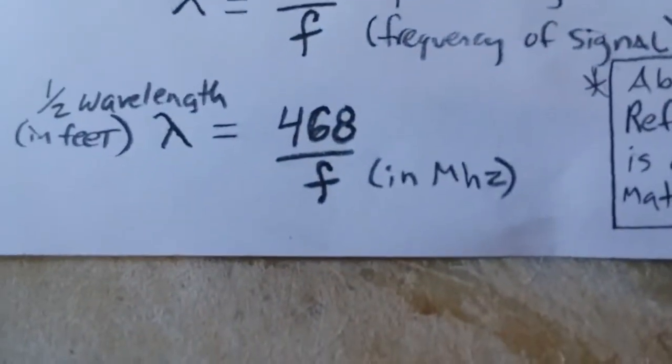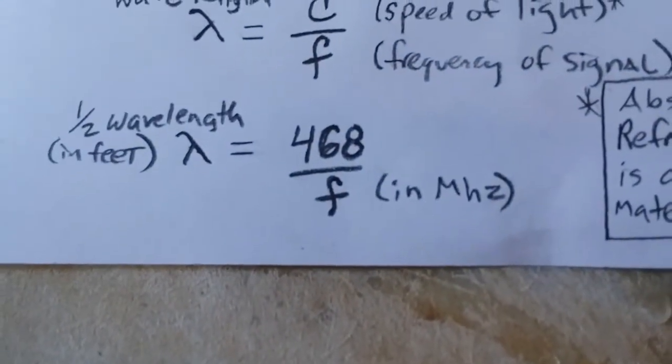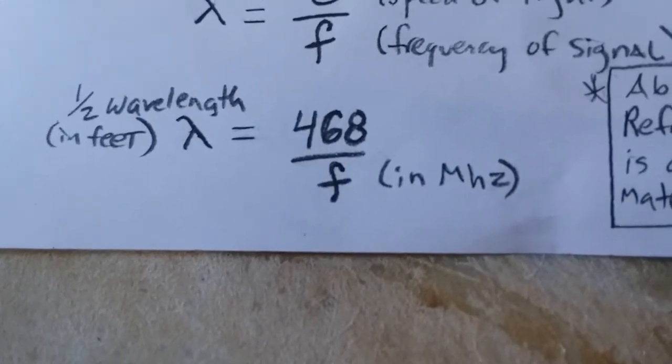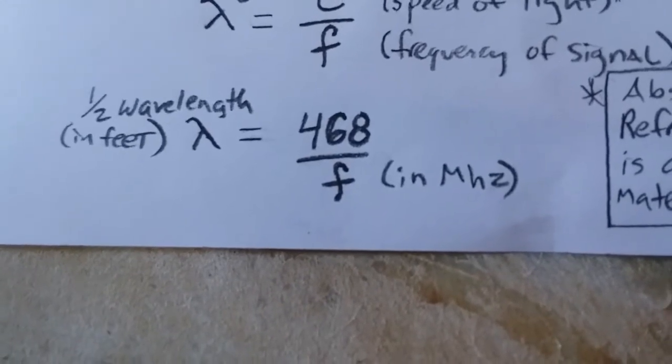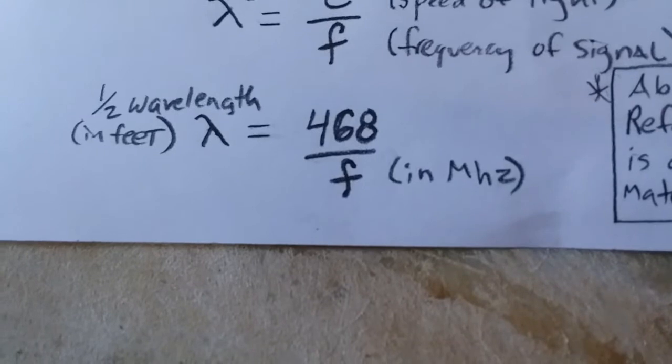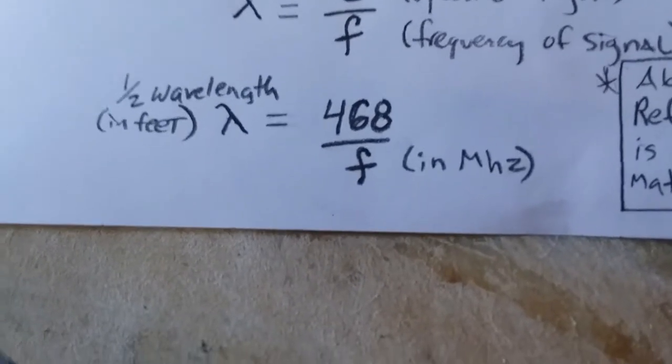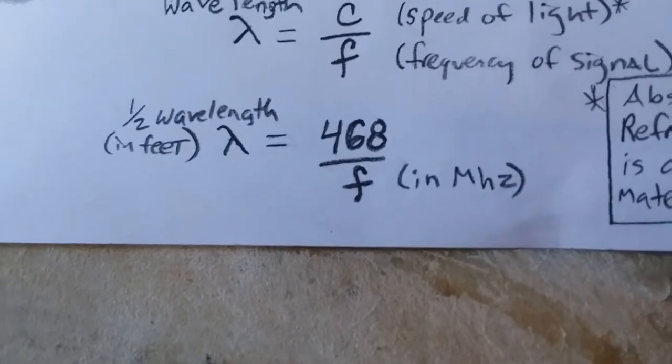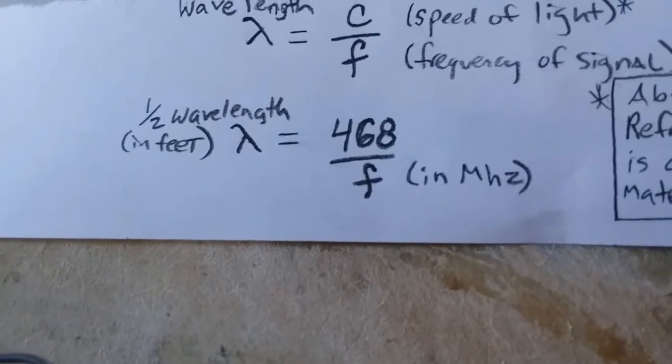This formula on the bottom is used by many ham radio and DIY amateur radio enthusiasts to figure out the half wavelength for a dipole, that's a two section antenna, to accommodate for space.